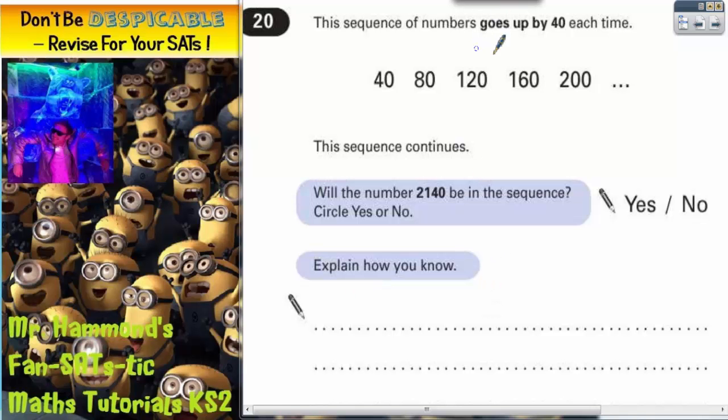Well the sequence is going up by 40 each time. Now what we don't want to do is just keep on adding 40s until we get to 2140. Because that will take forever.